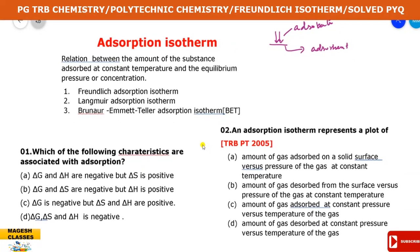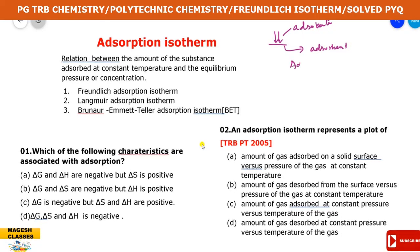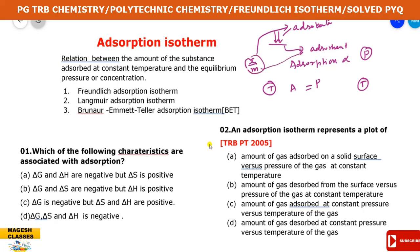The adsorption isotherm gives the background for adsorption. The important factors are pressure and temperature. At a particular constant temperature, adsorption and pressure have a relation - the relation between the amount of substance adsorbed at constant temperature is x by m, which is the surface coverage. Here x is the amount of adsorbate and m is the mass of the adsorbent.